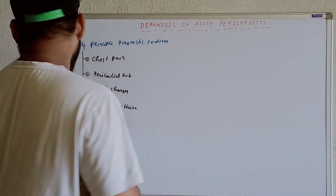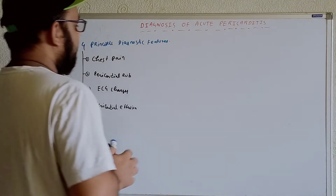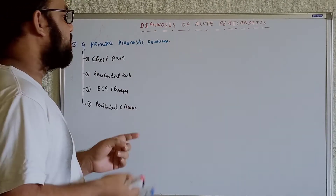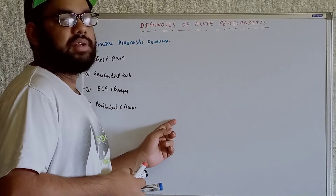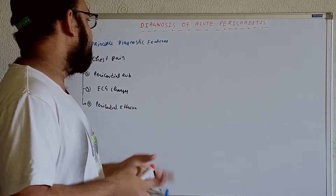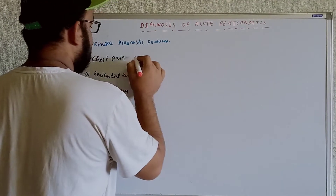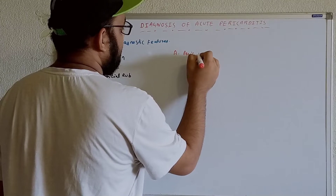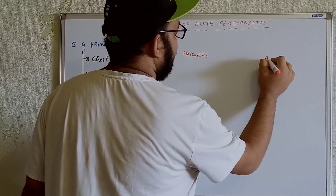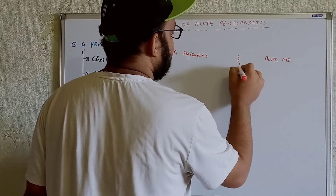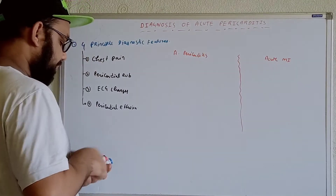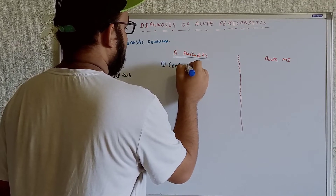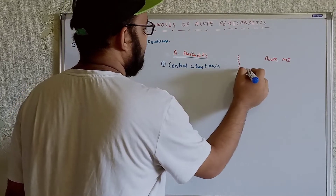First, let's talk about chest pain. Chest pain is seen in both acute pericarditis and acute myocardial infarction. How can we differentiate between them? In both acute pericarditis and acute MI, we get central chest pain.